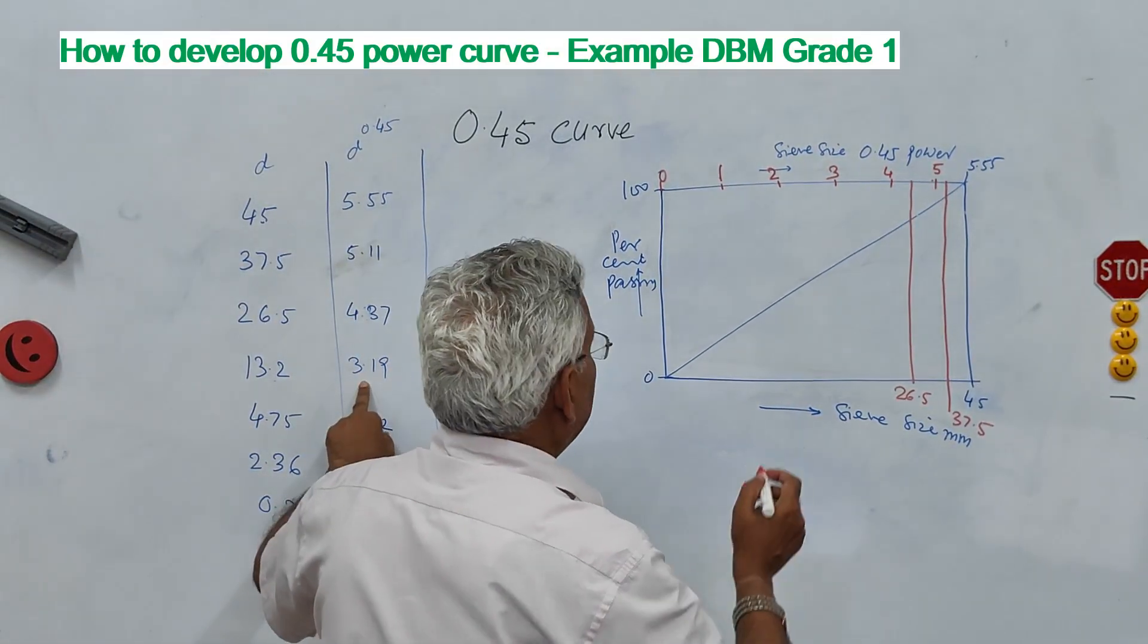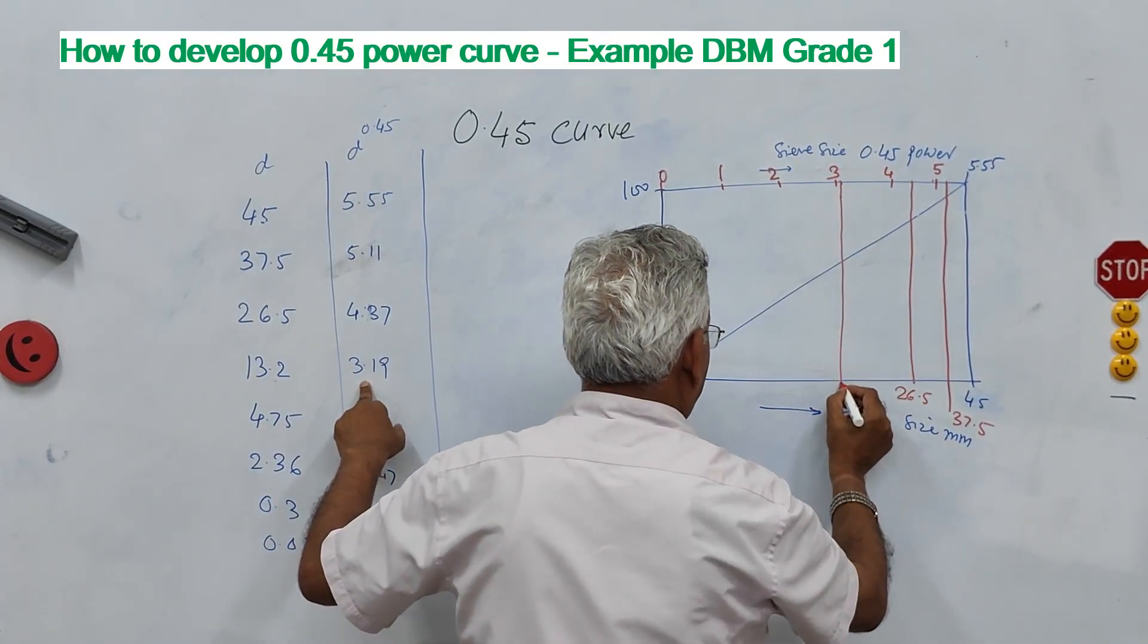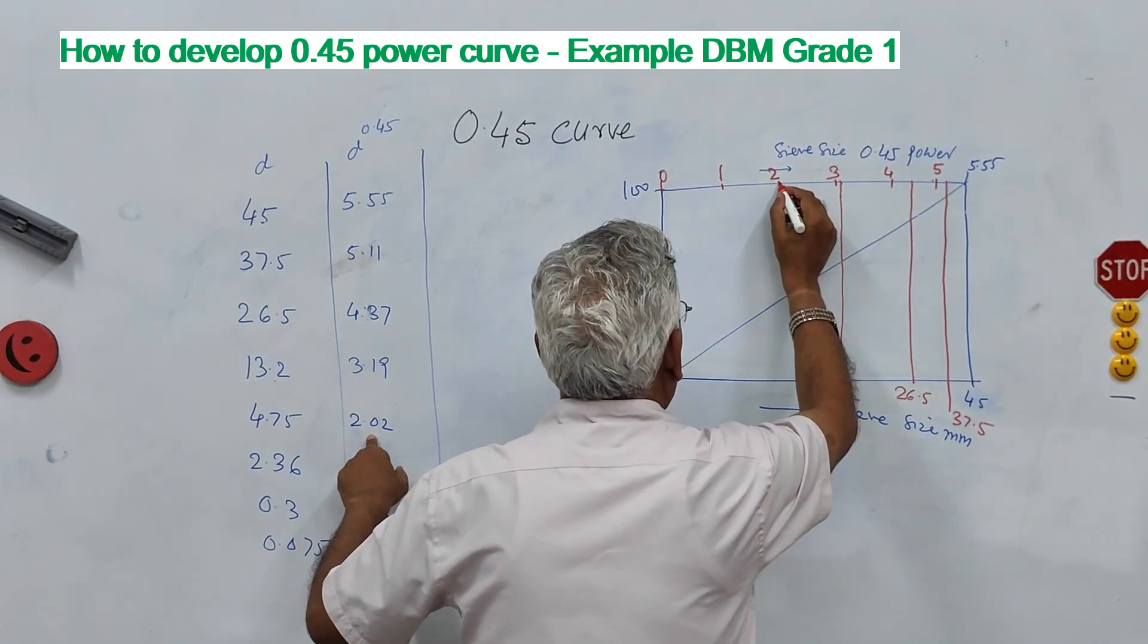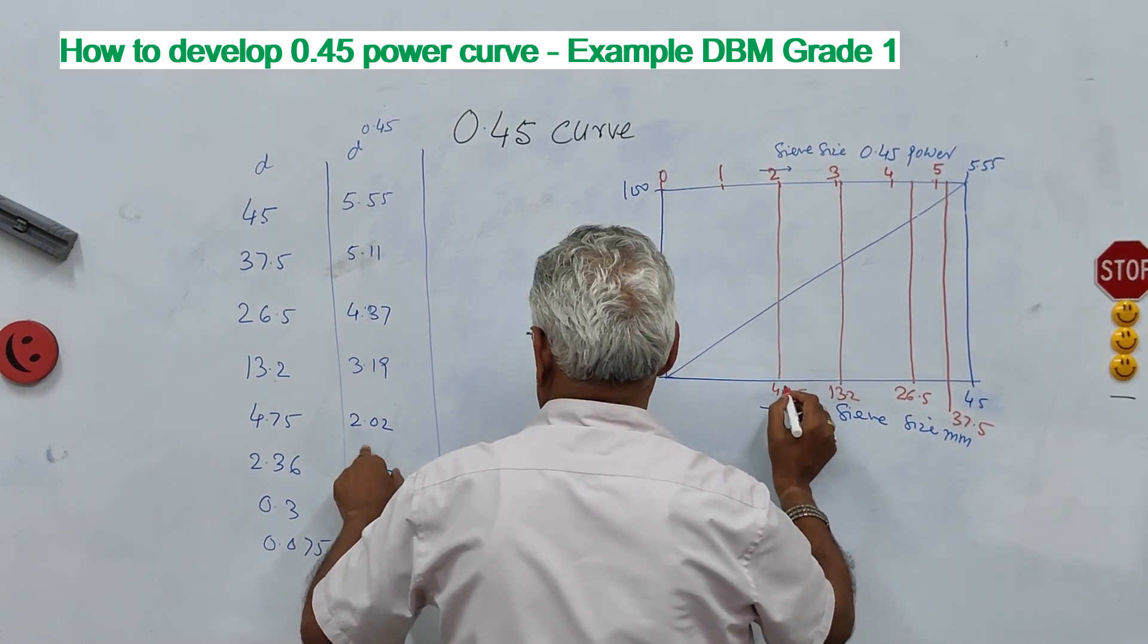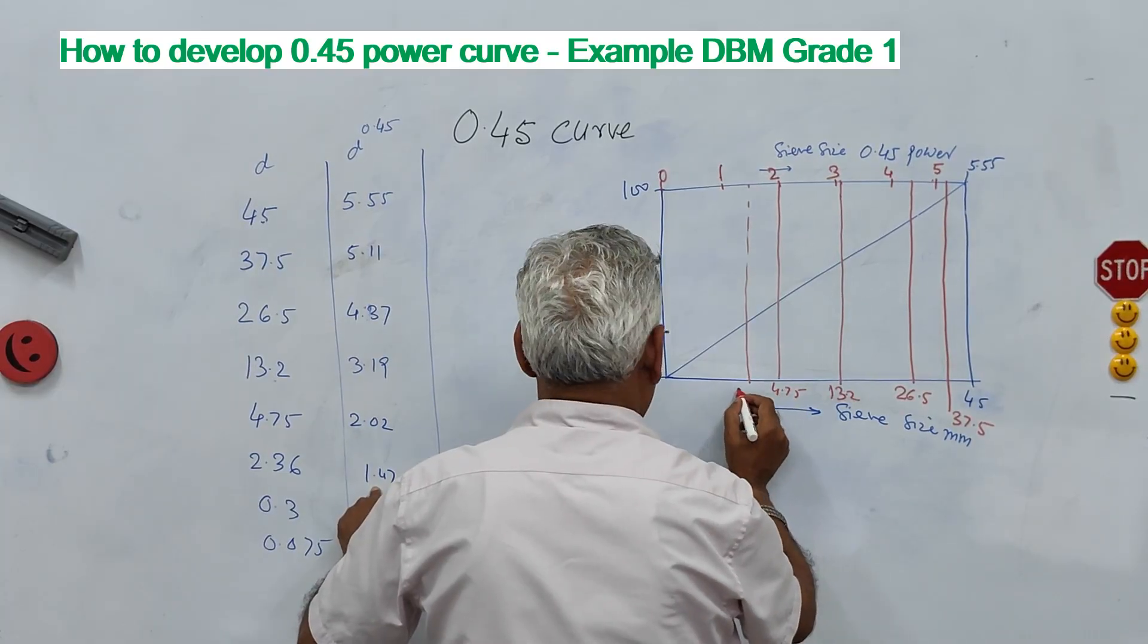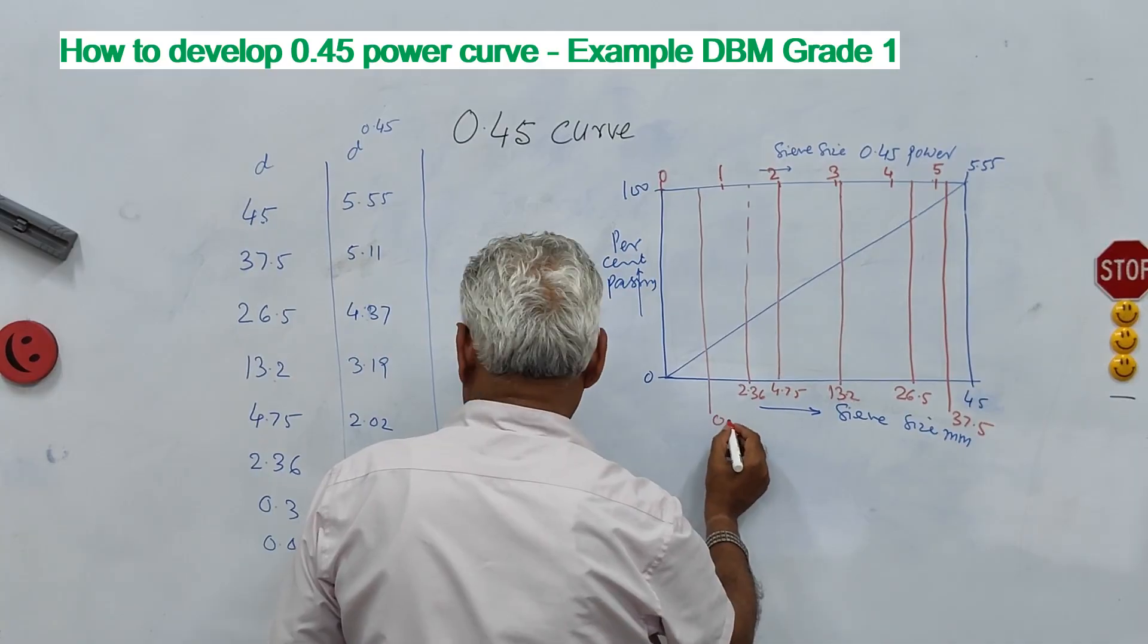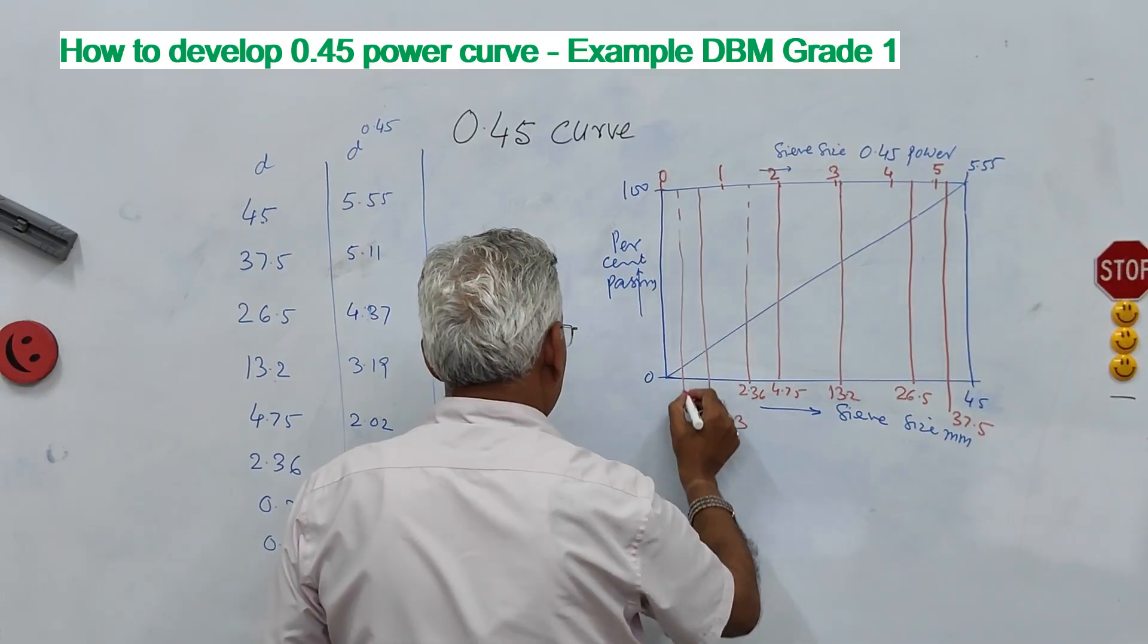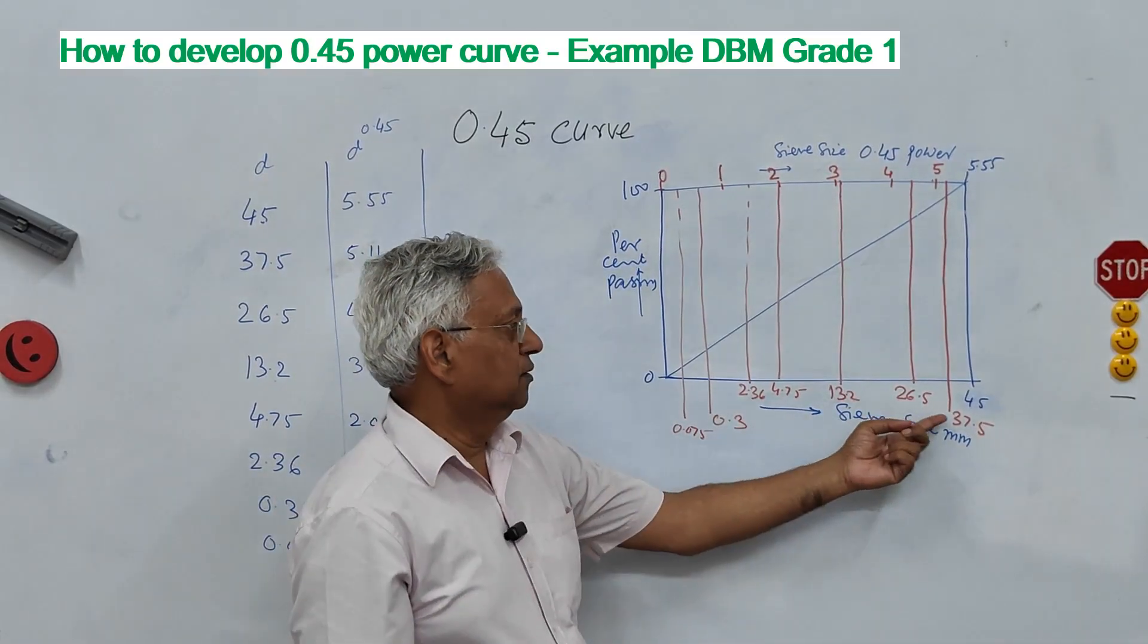So you have another 3.19 let us see here. So this size is 13.2, this size is 4.75, 2.36, 0.3, 0.075.